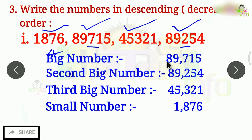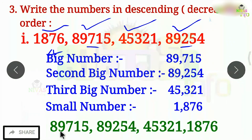First, we find out the big number. The last big number is big. The last single number is the small number. If you want to make a descending order line, the big number comes first and the small number comes last. So the descending order is: 89,750; 89,254; 45,321; 1,876.